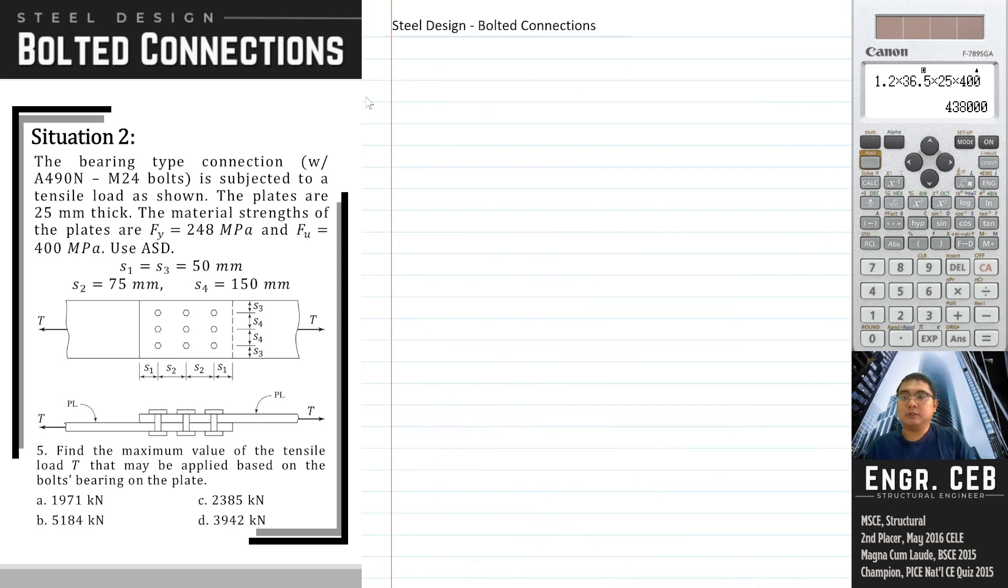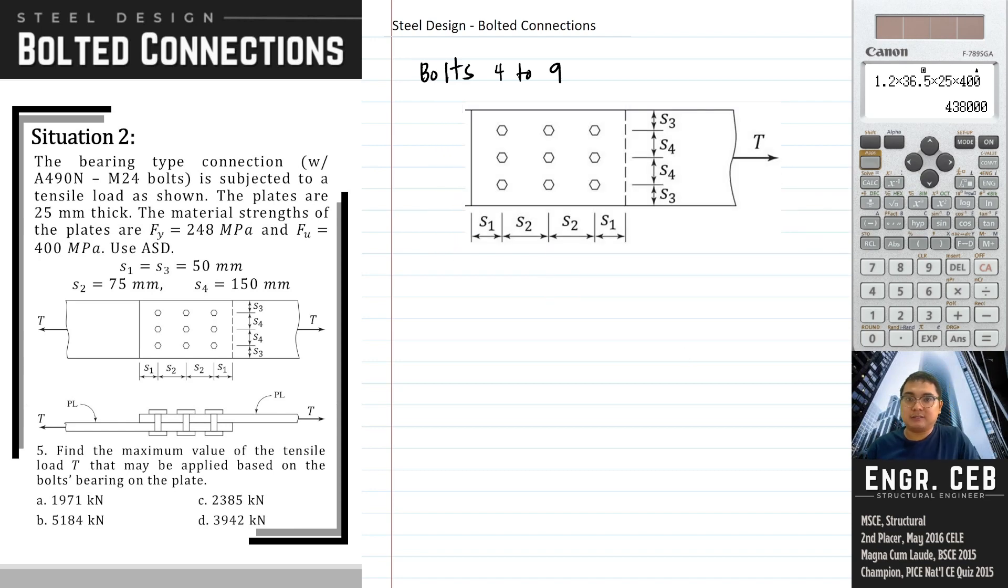And then we continue. For bolts 4 up to 9, the LC will be this one. This will become the LC because this is the direction where the plate will be tear-out once we have applied a load of T to the right. They have the same LC because the spacing is the same. So we can compute for L sub C. That is S2, which is 75 minus 1 half of the hole from the left and right or from each side. So all in all, we are like subtracting one complete hole. So that is 48 mm.